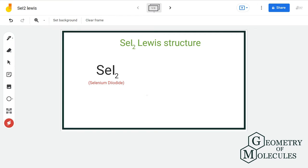Hello guys, welcome back to our channel. In this video, we will discuss the Lewis structure of SeI2. It's a chemical formula of selenium iodide.